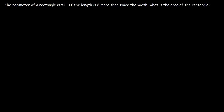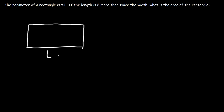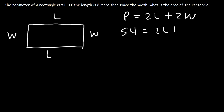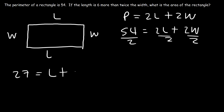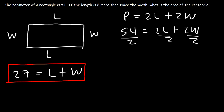Now let's try a word problem. The perimeter of a rectangle is 54. If the length is 6 more than twice the width, what is the area? The perimeter formula is 2L plus 2W equals 54. Dividing everything by 2 gives L plus W equals 27. We have two unknowns, so we need two equations.